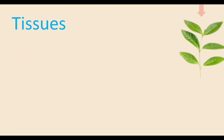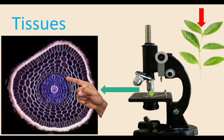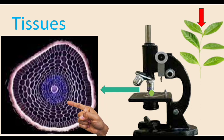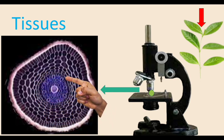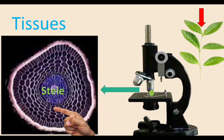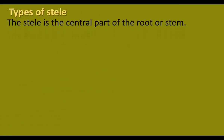A plant body is made up of different types of tissues. We can study the tissues with the help of a microscope. If we keep a small slice of a root or stem and observe under a microscope, we will see the internal structure. In this structure, the central part forms the stele.